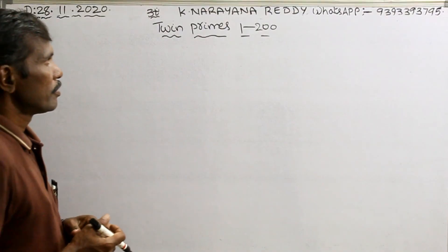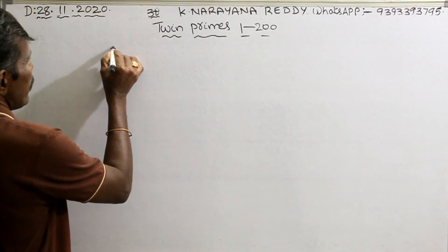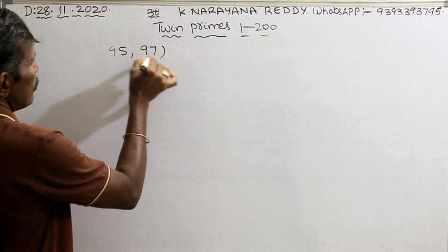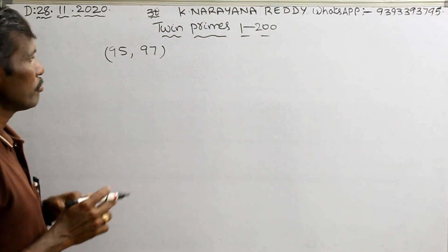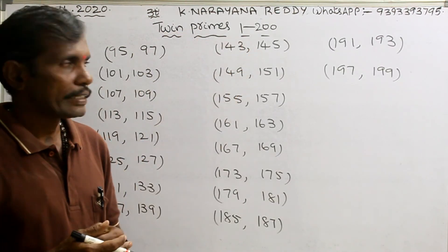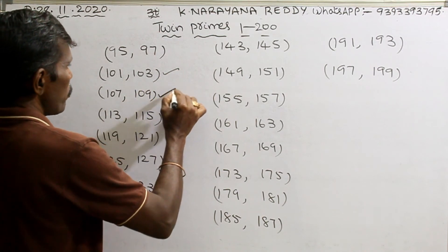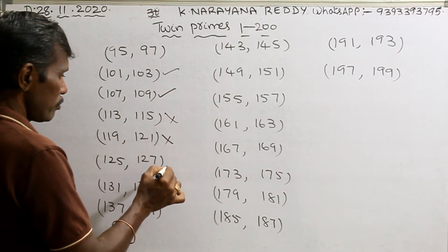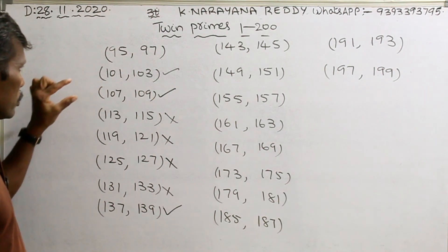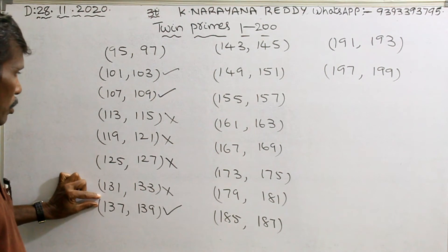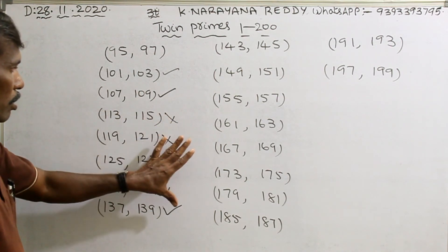Now, twin primes from 1 to 200. The last pair from 1 to 100 is (95, 97), which is not a twin prime. Continuing with the formula 6n−1 and 6n+1 beyond 100, we generate more pairs and check which are valid twin primes. For example, the pair (143, 145) is not a twin prime. Pairs like (191, 193) are twin primes because both are prime numbers. Similarly (149, 151) are both prime numbers — that is a twin prime.